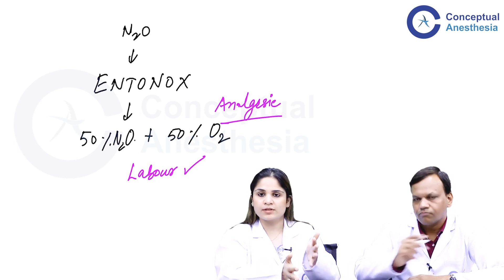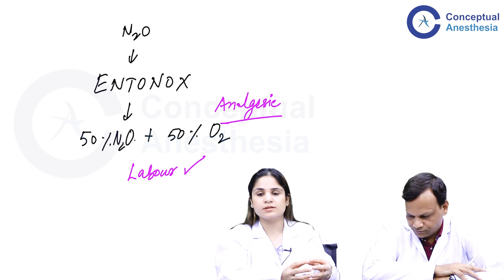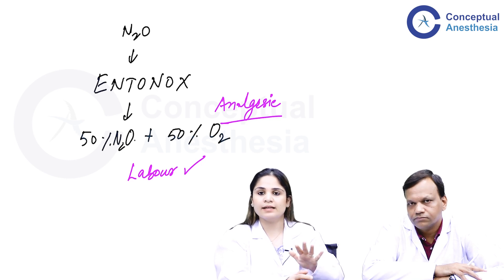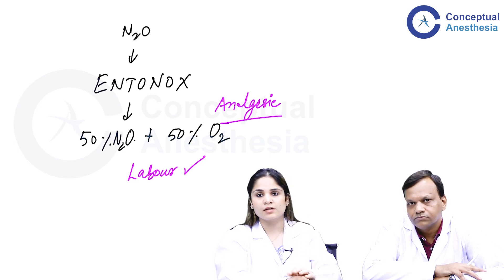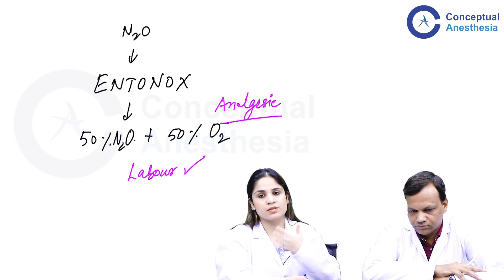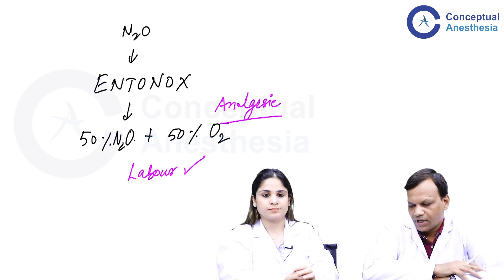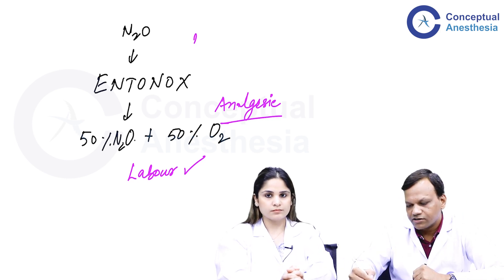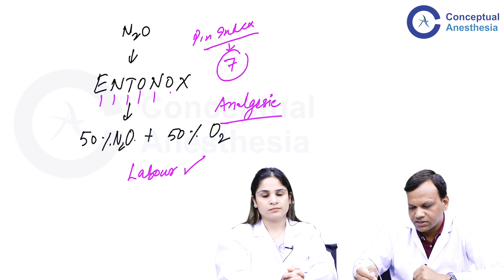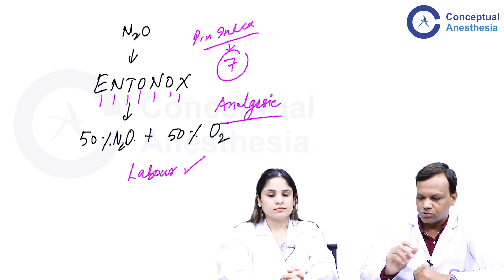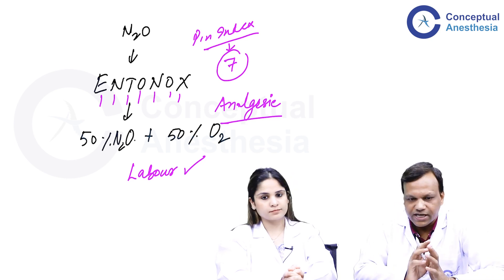Otherwise nitrous oxide is very safe for the liver and kidney, and it does not affect the heart as much as other anesthetic agents. The major problem with nitrous oxide is that it is not a complete anesthetic agent. One clinical use is as Entonox — a mixture of 50% oxygen and 50% nitrous oxide — which provides only pain relief and mild sedation without full anesthesia. It is useful during labor, where the mother inhales it through a tight-fitting mask for pain relief during childbirth without becoming unconscious. The pin index of Entonox is 7, which you can remember because 'Entonox' has 7 letters.